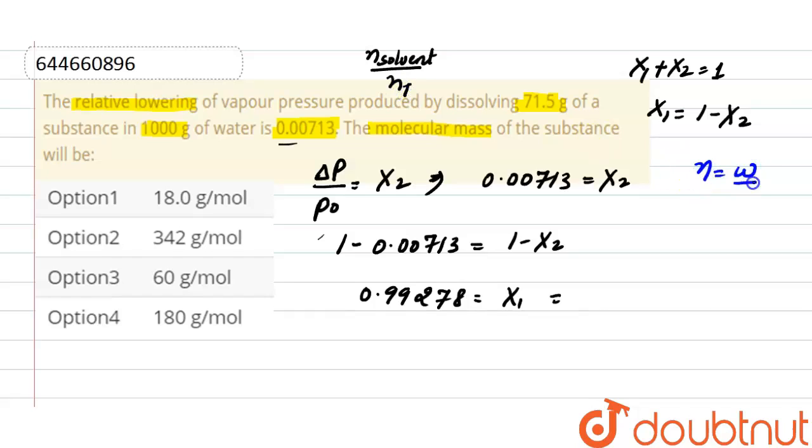So here, number of moles of solvent are: weight is given, that is thousand, and molecular weight of water is 18 (2 plus 16), divided by thousand divided by 18 plus 71.5 mass of solute and molecular mass of solute.